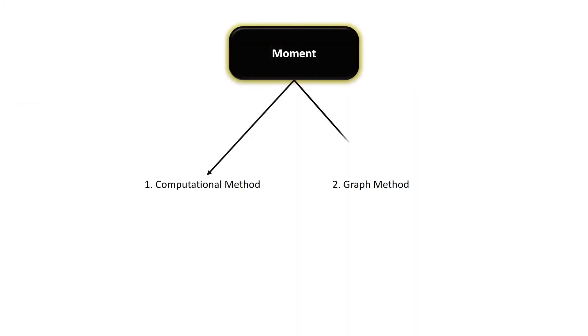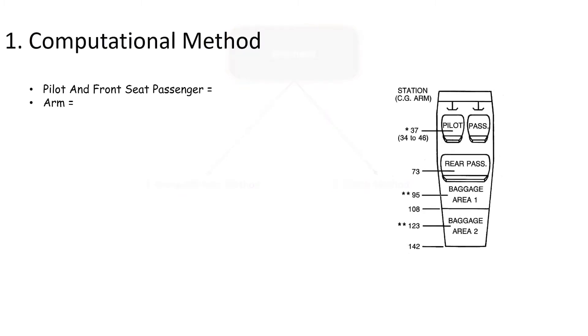There are two methods available to find the moment. Computational method involves locating the arm of the object, often referred to as a station, and multiplying it by its weight to establish the moment. The product is divided by a constant to simplify computations. This is known as a moment index.